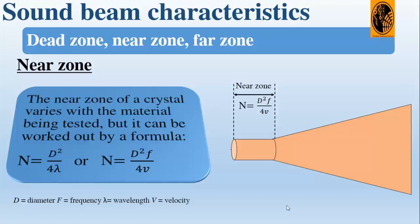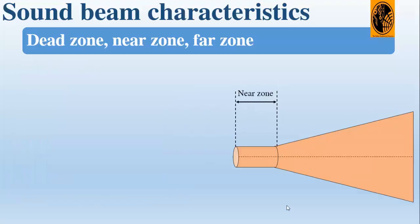D is the diameter of the crystal, F is the frequency, lambda is the wavelength, and V is the velocity of sound propagation.